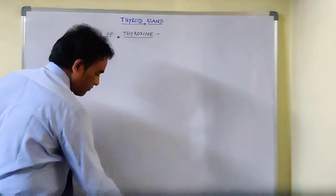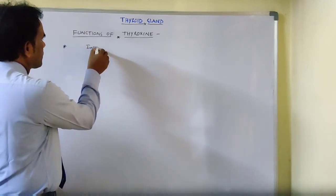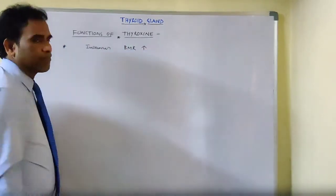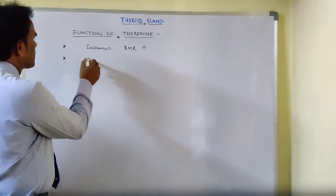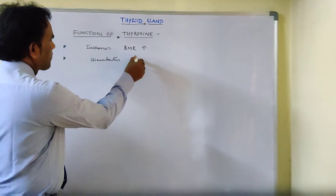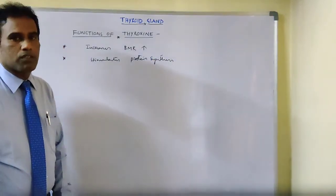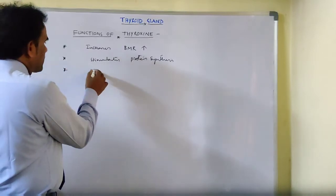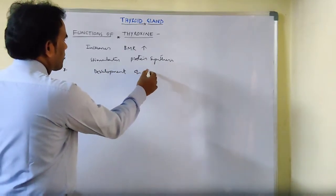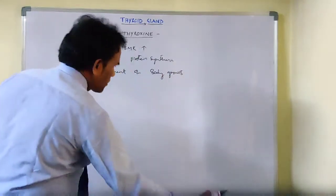Mainly, it increases basal metabolic rate — BMR. Another function is it stimulates protein synthesis. Thyroxine stimulates protein synthesis. And another function is it helps in the development of body growth.